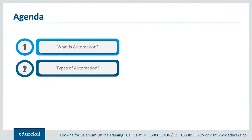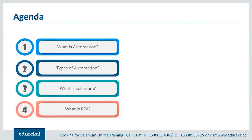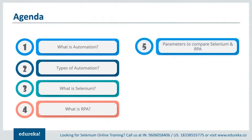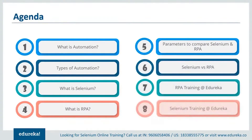First, we'll talk about the automation testing tool Selenium and learn its features. Once we're done with that, we'll take a look at the business process automation technology RPA and comprehend how it is used to automate repetitive tasks. Moving further, we'll discuss the parameters taken into consideration for comparing both Selenium and RPA, talk about their similarities, and finally wrap up by comparing them based on those parameters.